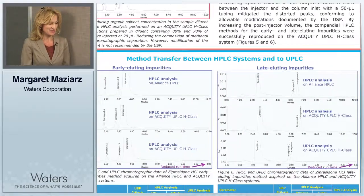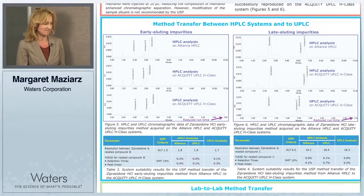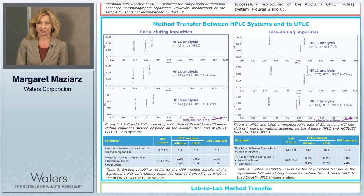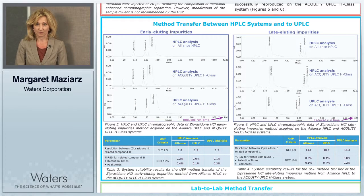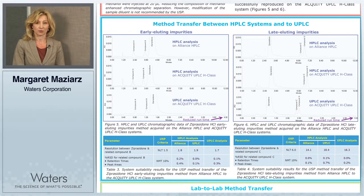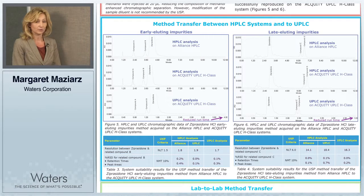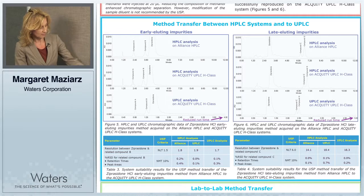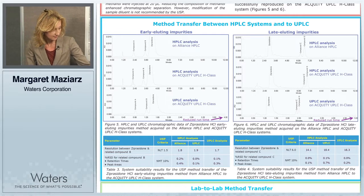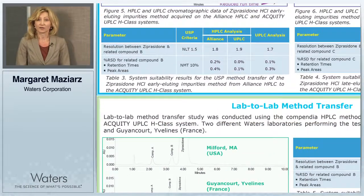Next, we updated the HPLC method to UPLC utilizing 1.7 micron particle size columns. By doing so, we reduced runtime by 63%, as demonstrated in figures five and six.